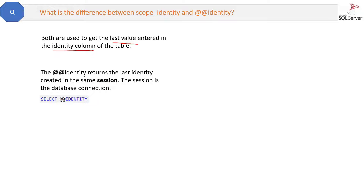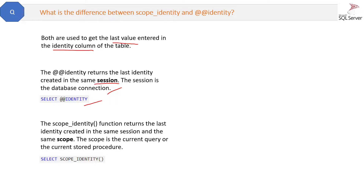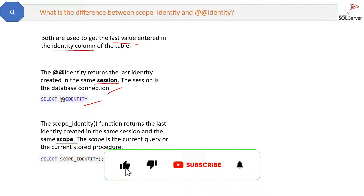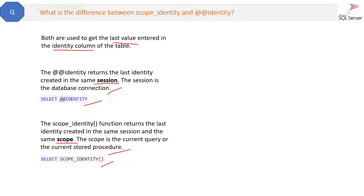@@IDENTITY returns the last identity created in the same session — the session being the database connection — and you can retrieve it using: SELECT @@IDENTITY. On the other hand, SCOPE_IDENTITY returns the identity created in the same session and the same scope. The scope is the parent query or the current stored procedure, and you retrieve it using: SELECT SCOPE_IDENTITY.